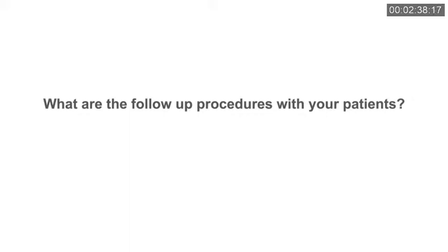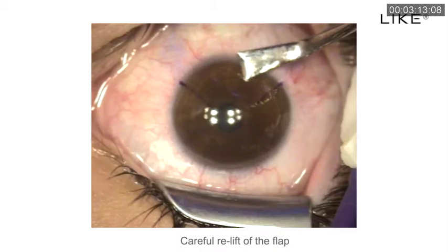What are the follow-up procedures with your patients? The follow-up is very comparable to any keratoplasty follow-up, which means that we see the patient in early postoperative follow-up within the first week, at least once or twice. Then we see the patient on a monthly basis until we have stabilization in refraction as well as in corneal topography, because it doesn't make sense to do the next step of the LIG procedure — the laser step — before we have a stable result.